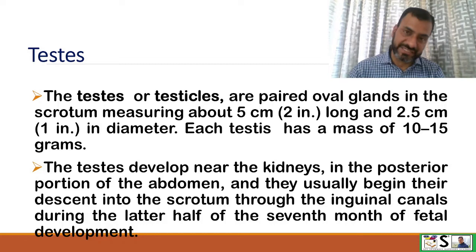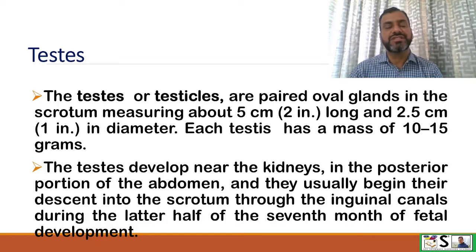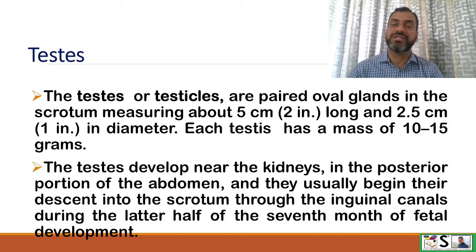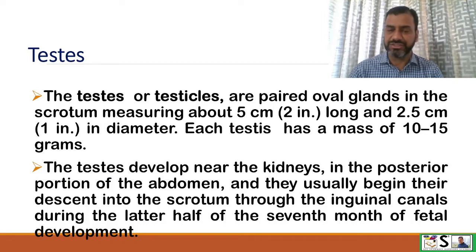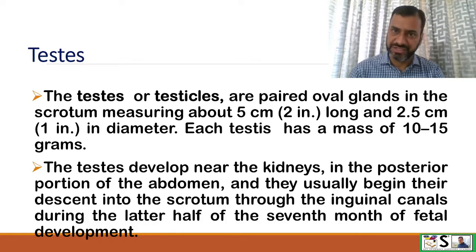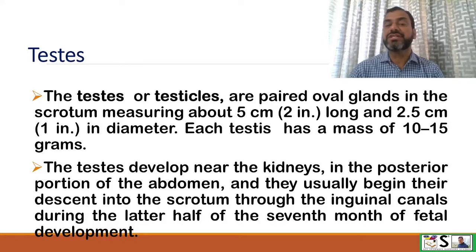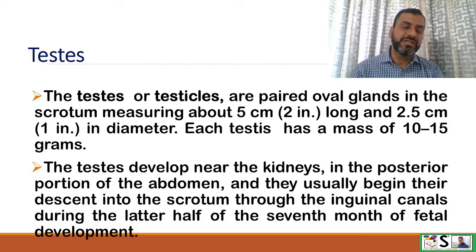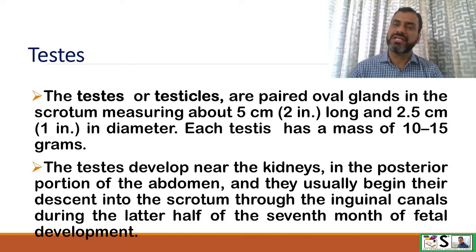Now we come to the testes. The testes or testicles are paired oval organs in the scrotum measuring about 5 cm long and 2 to 5 cm in diameter. Each testis has a mass of about 10 to 15 grams. The testes originally developed near the kidneys in the posterior portion of the abdomen, and they usually begin to descend into the scrotum through the inguinal canal during the later half of the 7th month of fetal life.